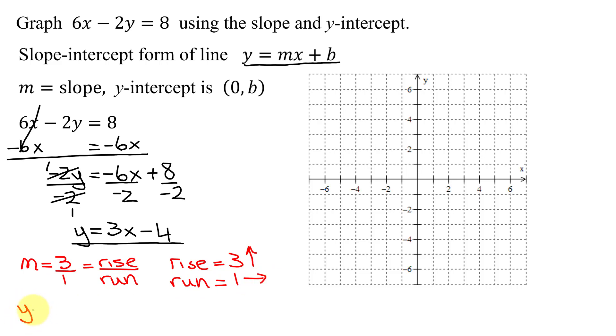Also, from the equation, I know the y-intercept has the coordinates 0, comma, b, and what's b in this case? Negative 4.